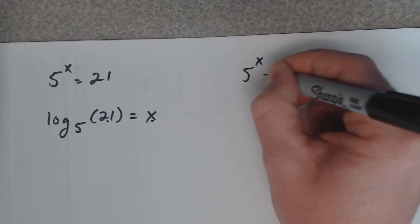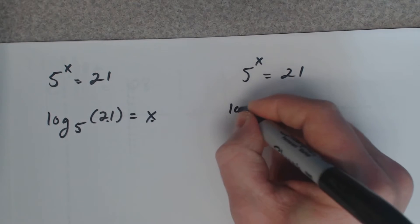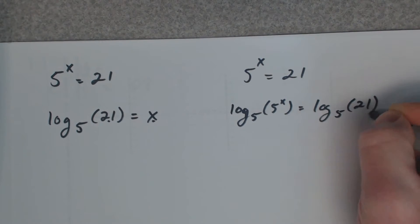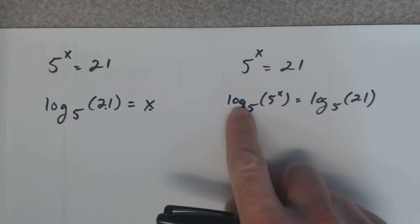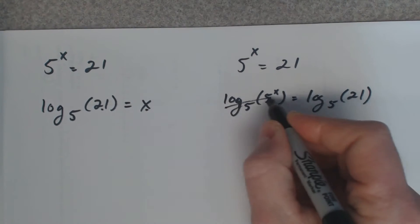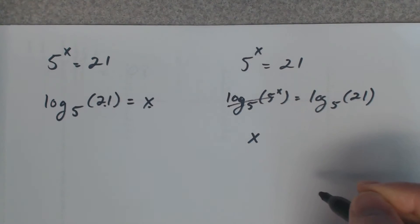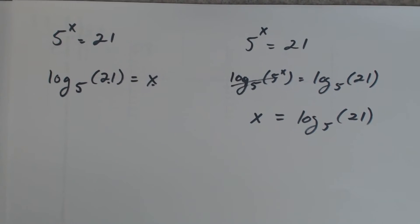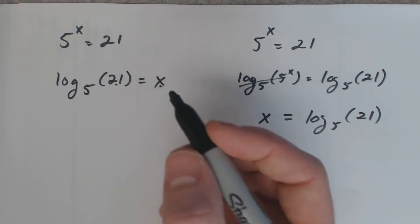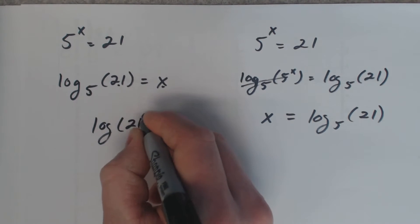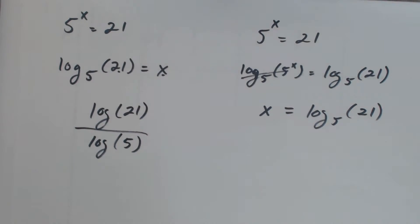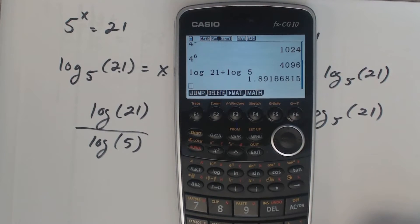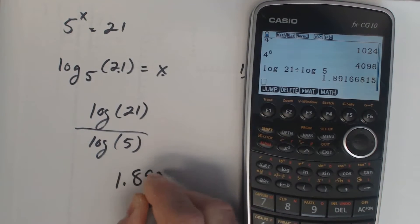Or, some people will look at it like this. They'll say, take the log base five of both sides. If you take the log base five, log base five of five cancels to one, or it gets rid of the power there. It's just x. It cancels to x. And you still live with log base five of twenty-one. That's the same thing I've got over here. I'm just rewriting it in logarithmic terms. Log base five of twenty-one. You've got to change the base formula. Any calculator will do this. You don't have to have a fancy calculator. So, log twenty-one divided by log five. One point eight nine one seven.